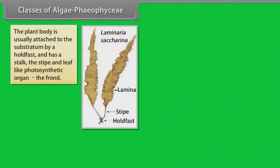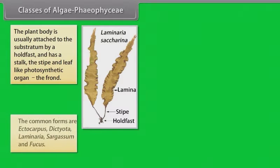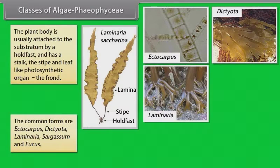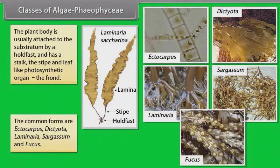The plant body is usually attached to the substratum by a holdfast and has a stalk, the stipe, and leaf-like photosynthetic organ, the frond. The common forms are Ectocarpus, Dictyota, Laminaria, Sargassum, and Fucus.